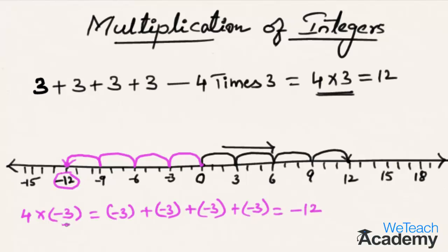You would have noticed that when multiplying with a negative integer we are moving towards the left on the number line, and when multiplying with a positive integer we are moving towards the right on the number line. So 4 times minus 3 is minus 12.